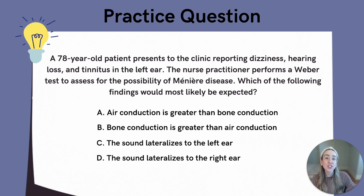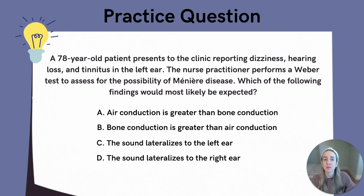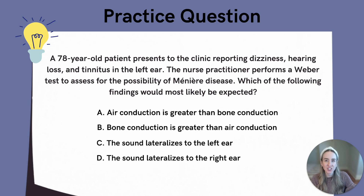When answering this question, it is very helpful to identify the key words and phrases that guide you toward the correct answer. In this case, the words and phrases are dizziness, hearing loss, and tinnitus, which are all classic symptoms of Meniere disease. It is also important to note that this question mentions the Weber test, which is a helpful tool to assess for hearing loss. Quick bonus question: is Meniere disease a type of conductive or sensorineural hearing loss? That's right — it's a type of sensorineural hearing loss.